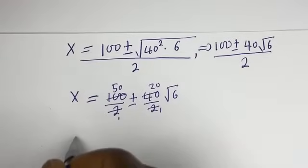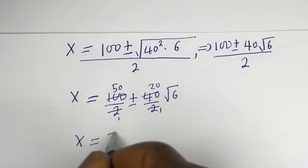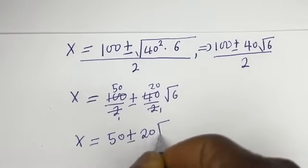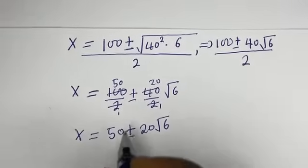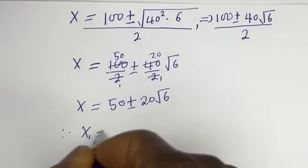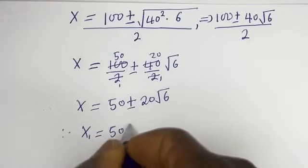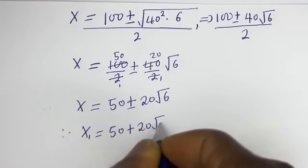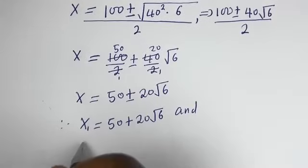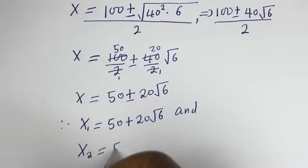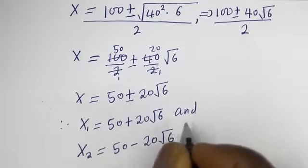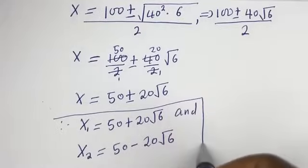x is equal to 50 plus or minus 20 root 6. Therefore, x1 is equal to 50 plus 20 root 6, and x2 is equal to 50 minus 20 root 6. We've gotten the values of x1 and x2.